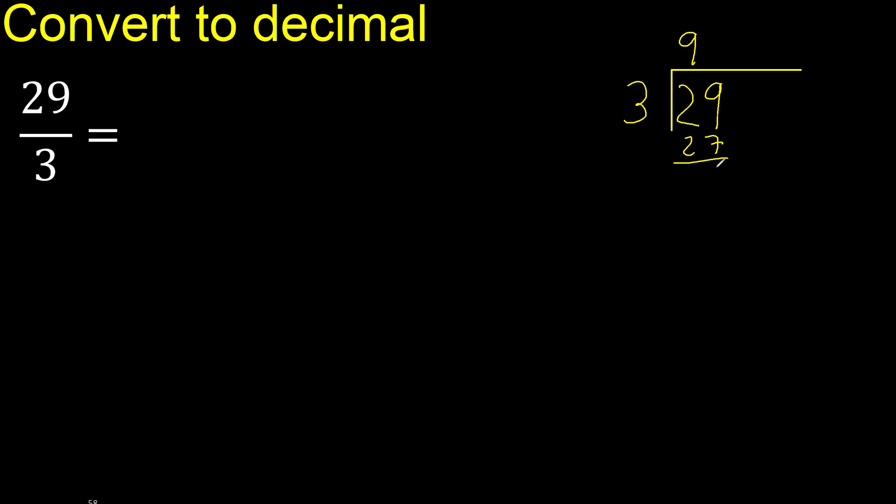29 minus 27 is 2. Next, there is no number, therefore complete, always complete with 0. Here with 0, ok.